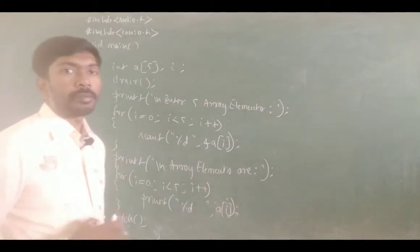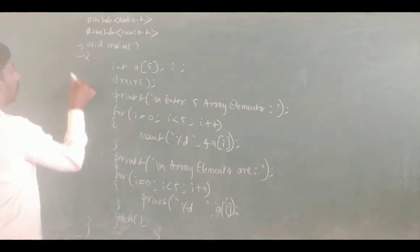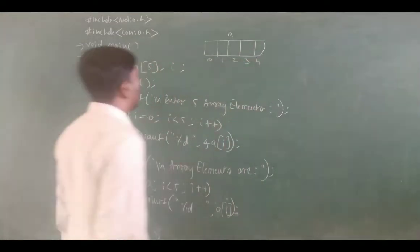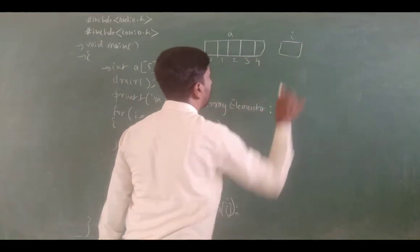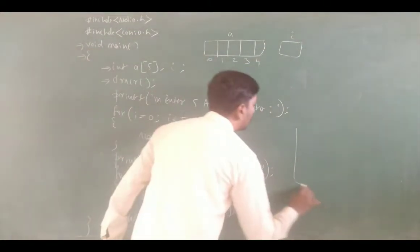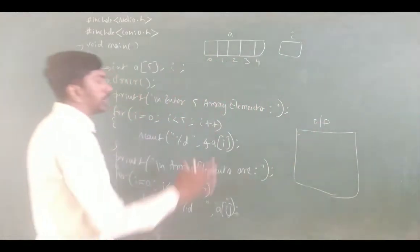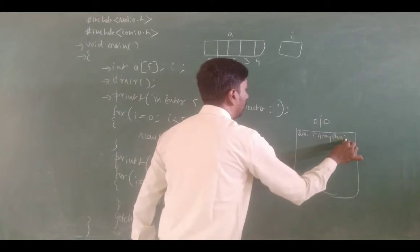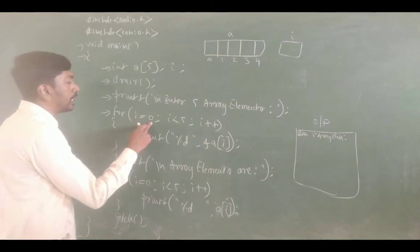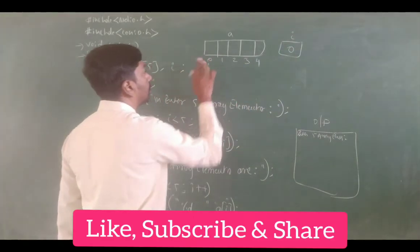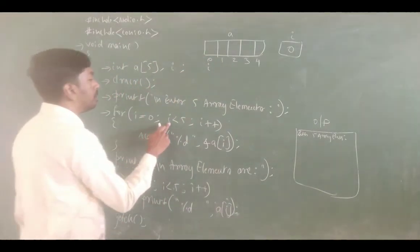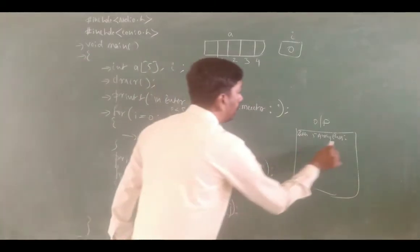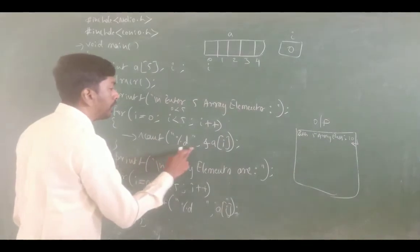Now let us trace this program. On entering void main, integer A of 5 creates 5 memory blocks with indices 0, 1, 2, 3, 4. Variable i gets one memory block. clrscr clears the output screen. printf prints 'enter 5 array elements'. The for loop begins: i is initialized to 0. Condition 0 is less than 5 is true. scanf reads input — user enters 10 and presses Enter. It is stored in A of 0 (since i = 0).